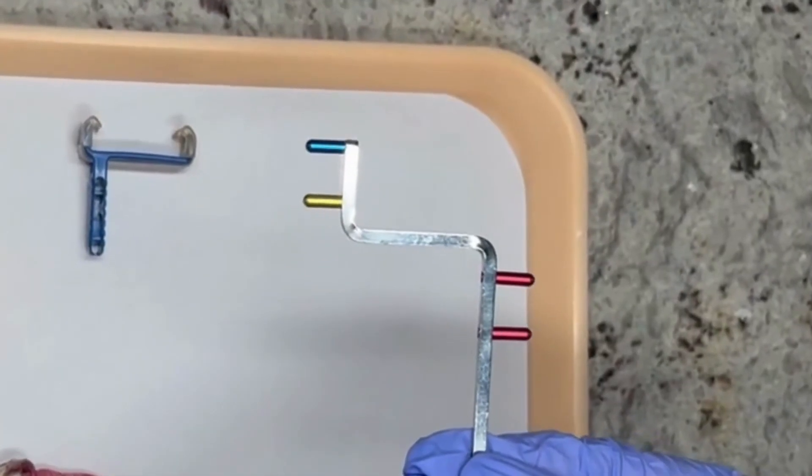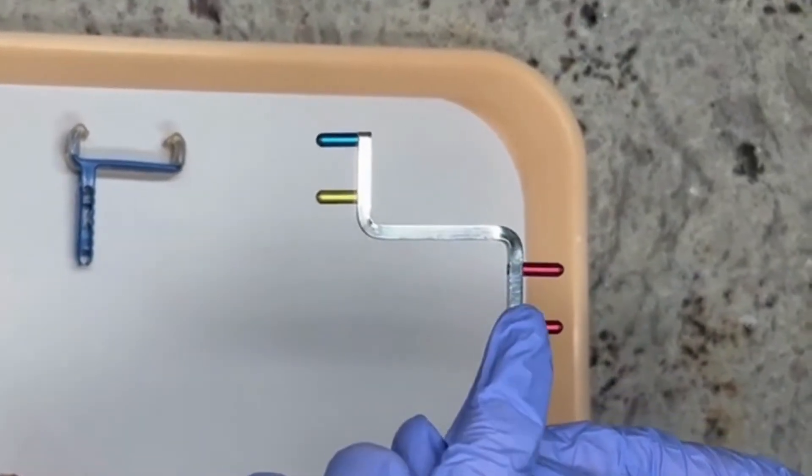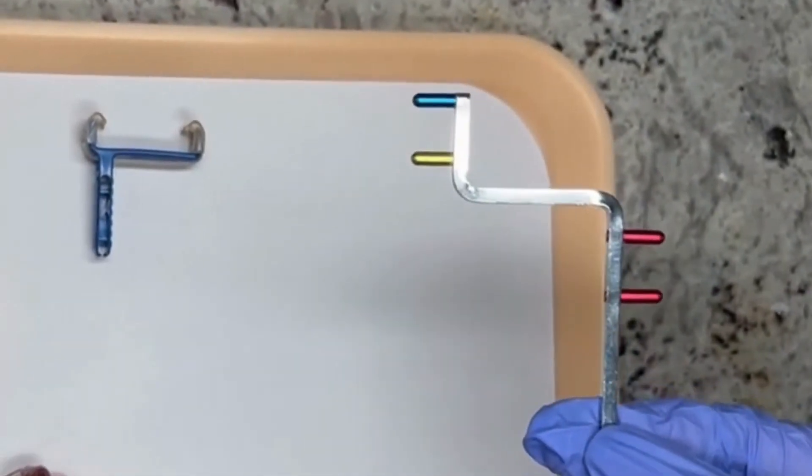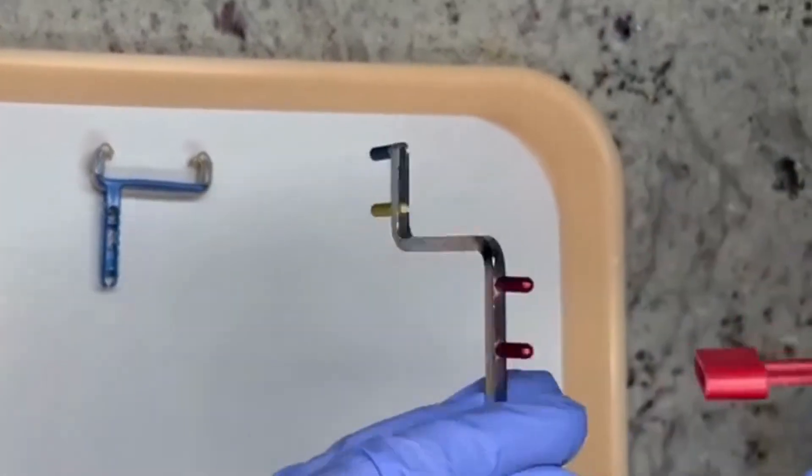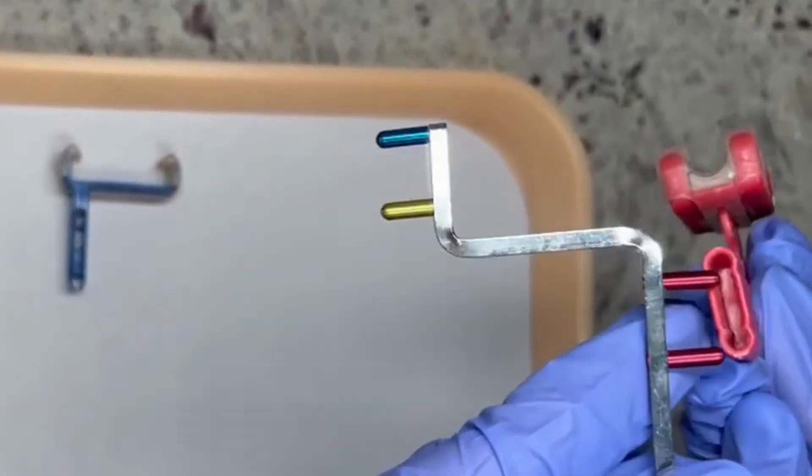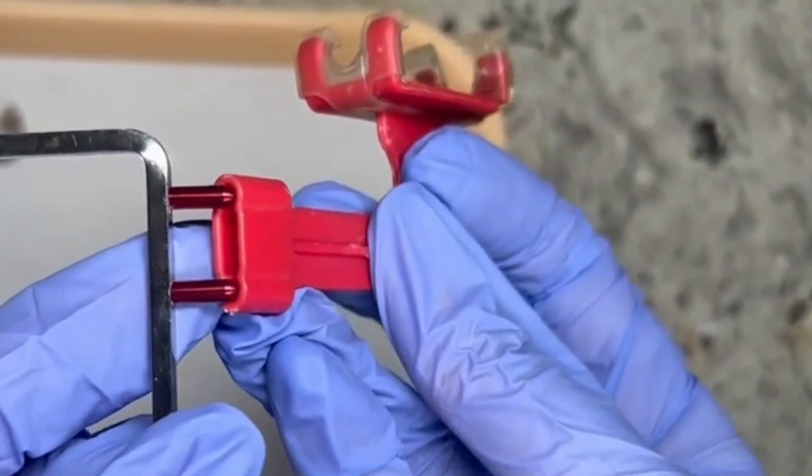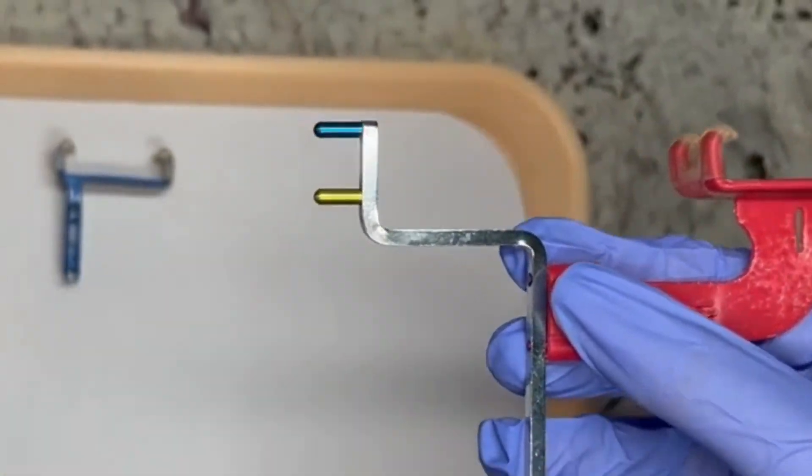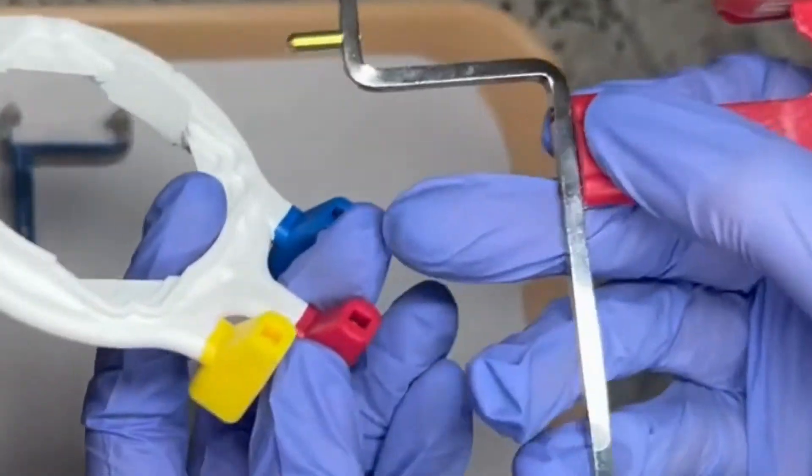Finally, for the bite wings we are going to use this portion of the arm right here. We're going to put it in this part, grab our bite tab and make sure that we line up these two parts. Then we're going to grab our ring and put the arm in the red portion.